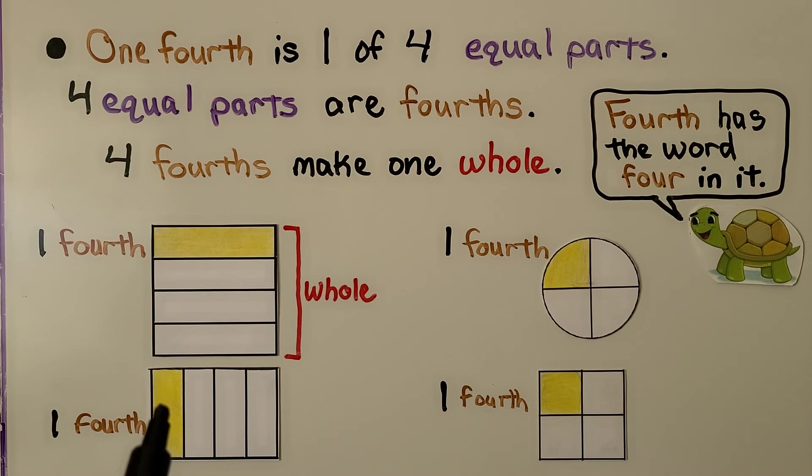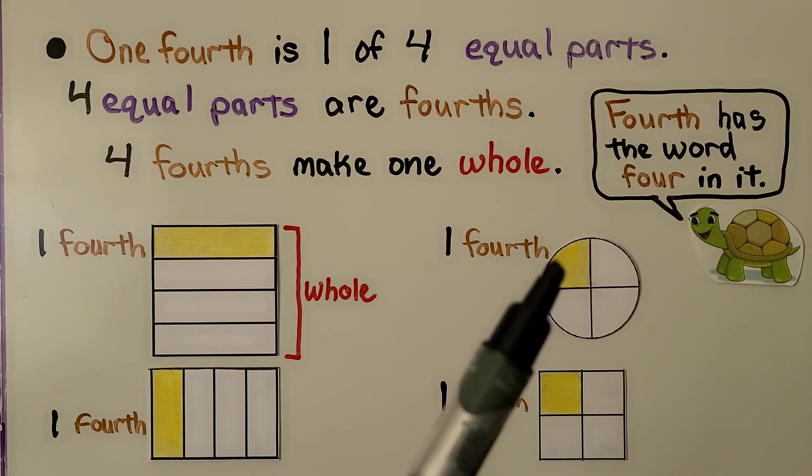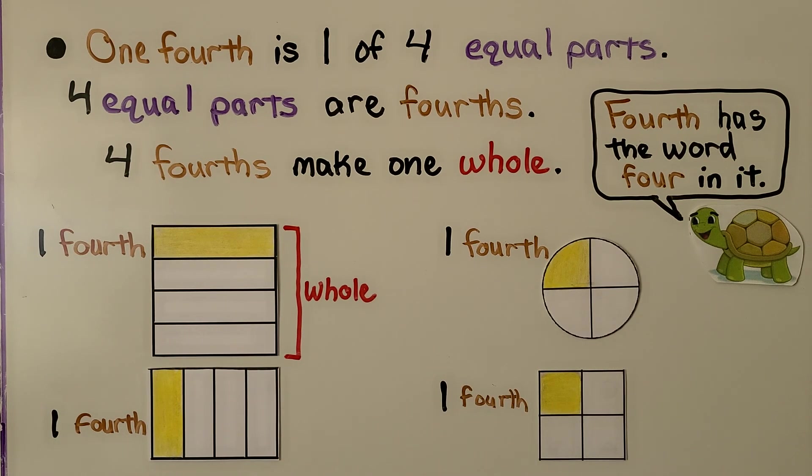This is one fourth. This is one fourth of a circle. This is one fourth of a square. And fourth, the word fourth has the word four in it. See? F-O-U-R. So that's easy to remember.